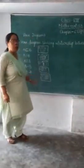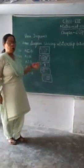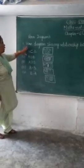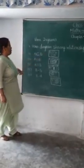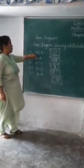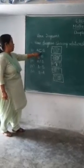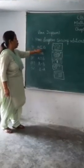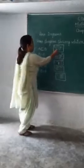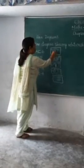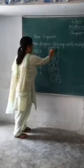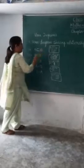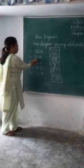Now you have seen the operations of sets. Now let's see how to represent those operations through Venn diagrams. Venn diagrams show the relationship between given sets. Suppose A is a subset of B — this is the sign for subset. If A is a subset of B, all the elements of A belong to set B, so set A will be drawn inside set B in the Venn diagram. This is the first way to represent sets through a Venn diagram. The second one is A union B.